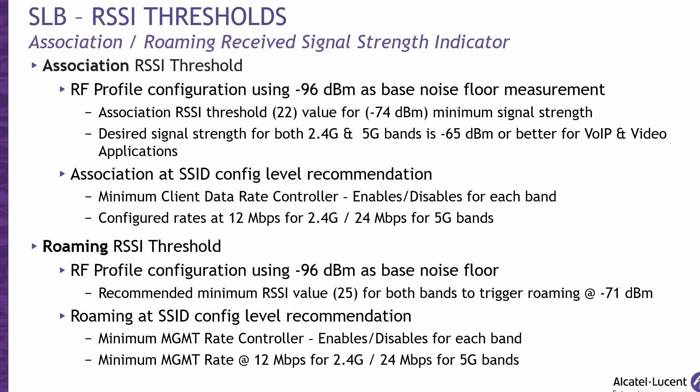The minimum management rate parameter can also help with roaming decisions when working with or without the 802.11k and 802.11v standards. These parameters are recommended to be enabled. The administrator can set the minimum management rate for each of the bands. The higher the rate value, the less coverage; the lower the rate value, the larger the coverage. For the roaming minimum management rates, we recommend 12 Mbps for 2.4 GHz and 24 Mbps for 5 GHz bands. The association minimum client data rate settings need to be equal or higher than the minimum management rate, and these configuration options can be set at the SSID configuration level.